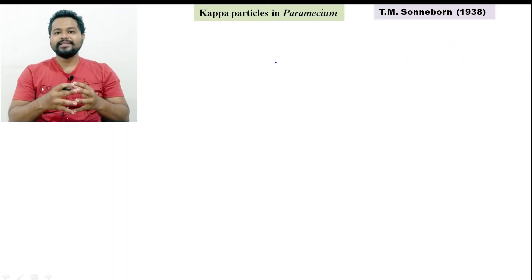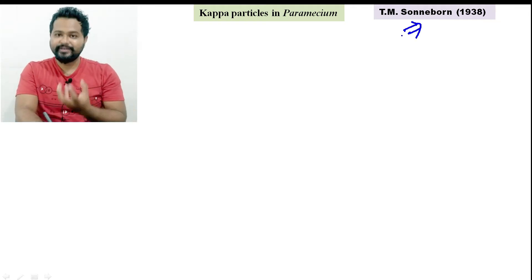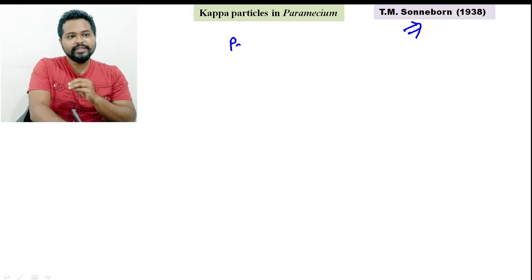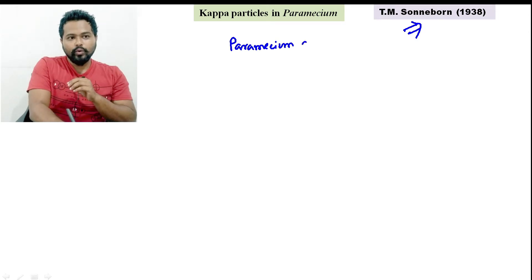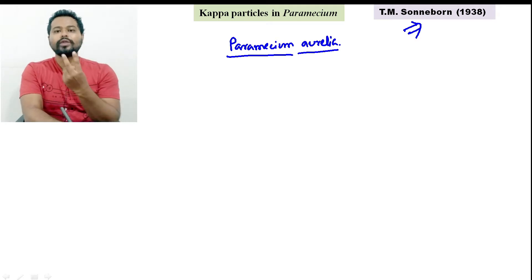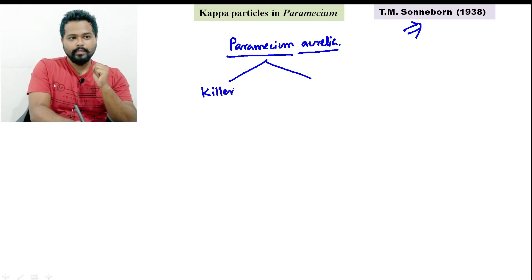The Kappa particles was discovered by T.M. Sonneborn in 1938. What was the Kappa particles? From Paramecium, P. aurelia, species two, they have two strains — that is a killer strain and a sensitive strain.